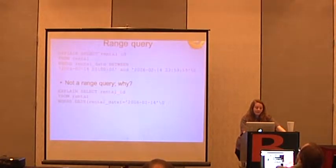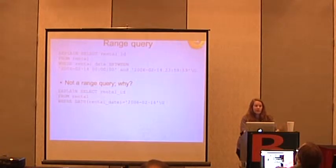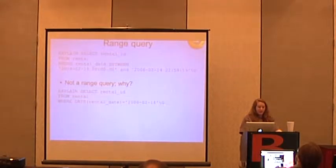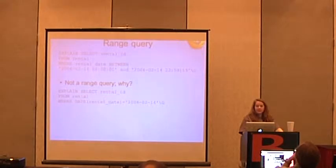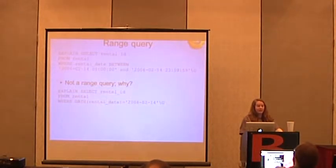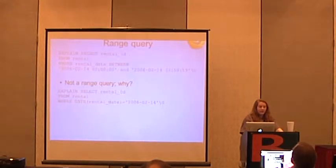Here's an example of a range query — rental date between this and that. But why isn't the bottom one a range query? It's because MySQL does not have materialized views and therefore does not have functional indexes. So it cannot take the DATE() function applied to rental_date and use an index on it — it has to go through every single rental date and apply the date function.